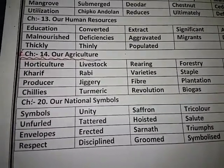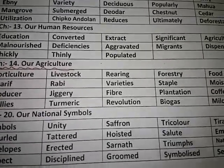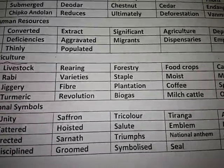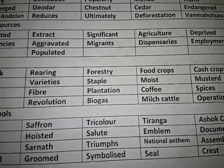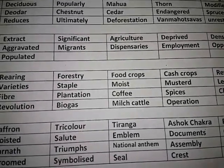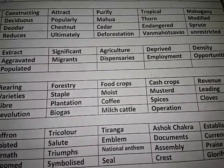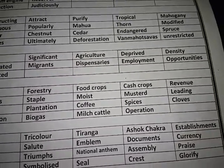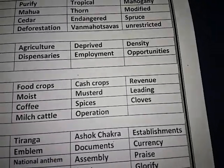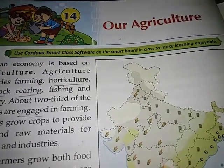Some more new words: producer, chillies, livestock, rabi, jaggery, turmeric, rearing, varieties, fiber, revolution, forestry, staple, plantation, biogas, food crops, cash crops, mustard, spices, operation, revenue, leading.